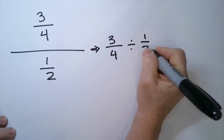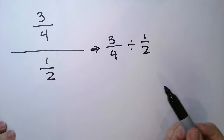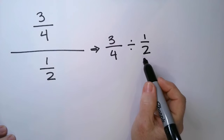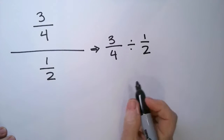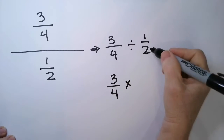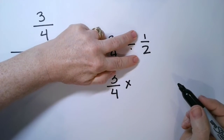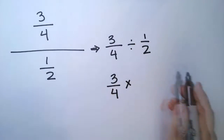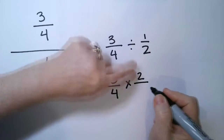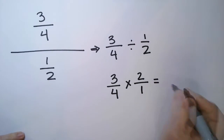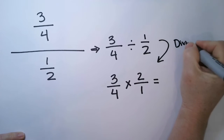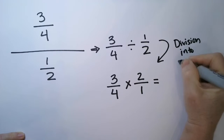So I have 3 quarters divided by 1 half. In order to change this division problem into something we can work with, we are going to change it into a multiplication problem. And we do that by taking the reciprocal, which simply means you make the 1 half turn into a 2 over 1 — whatever's on the bottom you put on the top, whatever's on the top you put on the bottom. And that's what we need to do in order to change a division problem into multiplication.